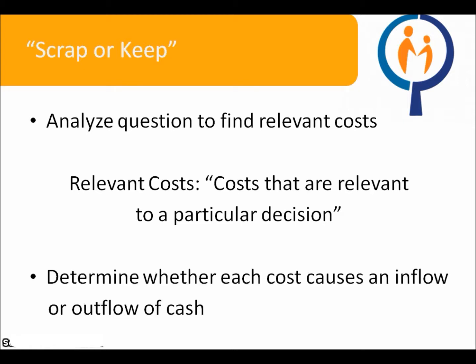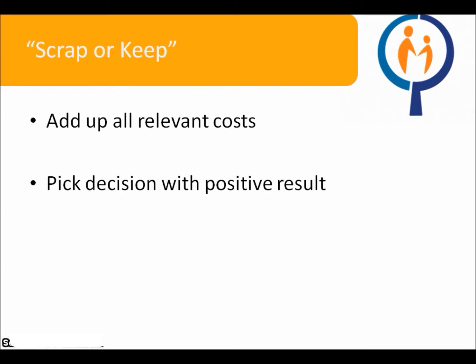After determining relevant costs, determine whether each cost creates an inflow or outflow of cash. For example, if you have chosen to repair your car and it takes $2,500 to repair it, that $2,500 would cause a negative outflow. Once that is complete, you simply add up all the relevant costs. A positive result will indicate that you have made the right decision, and a negative result will indicate that the right answer is in the opposite direction.